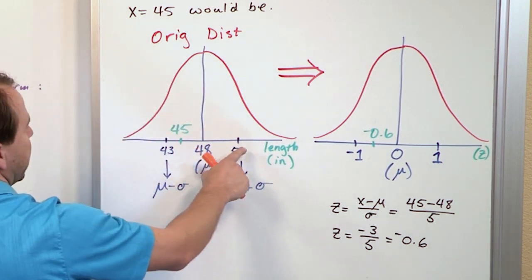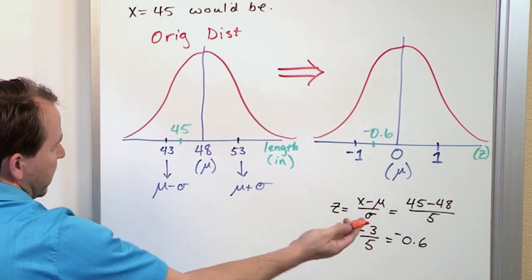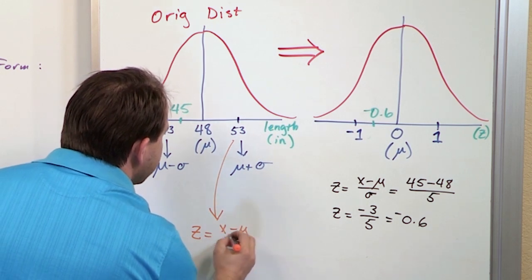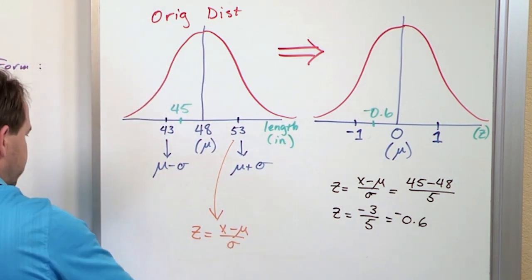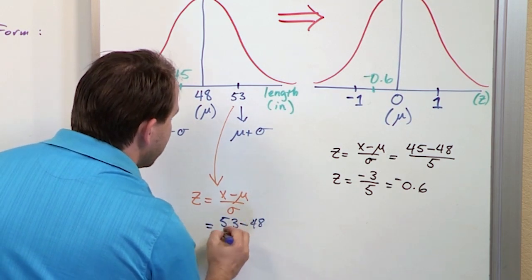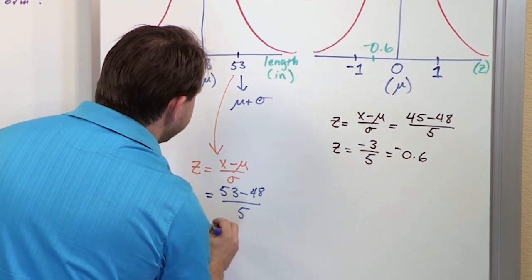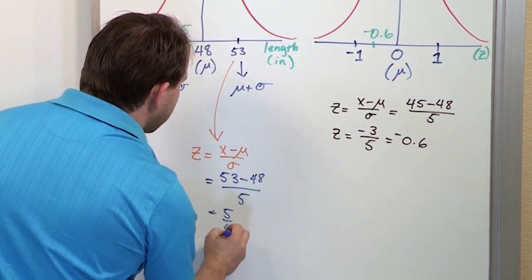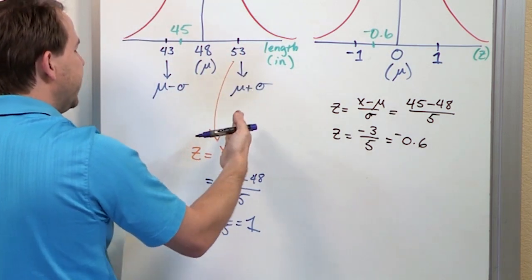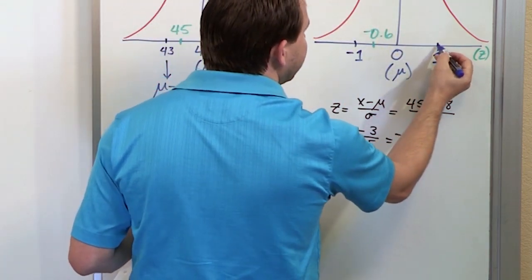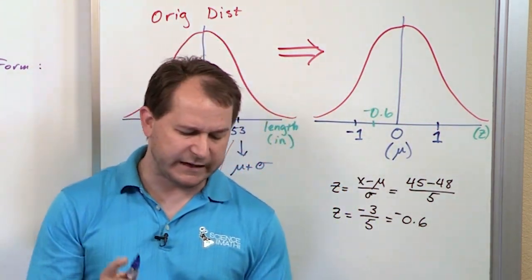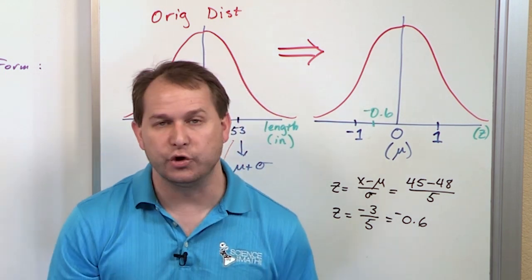Let's verify: converting x = 53, which was one standard deviation above the mean in the original curve. z = (53 − 48) / 5 = 5 / 5 = 1. So x = 53 corresponds to z = 1, which is exactly the +1 standard deviation mark on the standard normal distribution. This confirms that everything is normalized correctly.